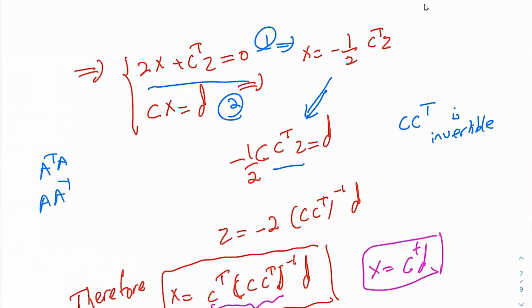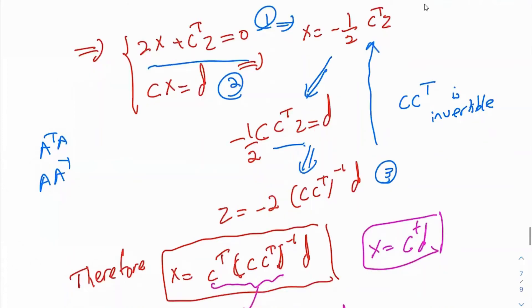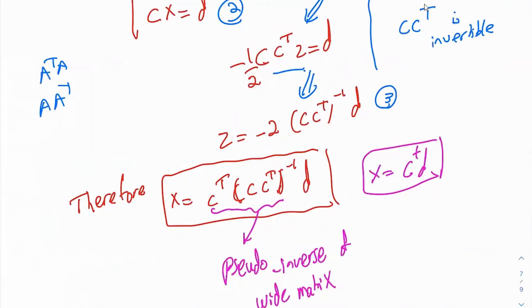So C C transpose must be invertible, meaning C should be right-invertible or have linearly independent rows. From here, calculate Z, then plug that Z back. The negative one-half and negative 2 cancel each other out. What you get is X equal to C transpose times (C C transpose) inverse times D. This is nothing but the pseudo-inverse of C — the right inverse. So X equals C pseudo-inverse times D.